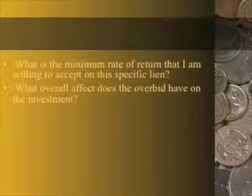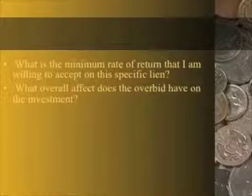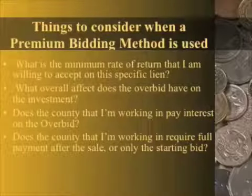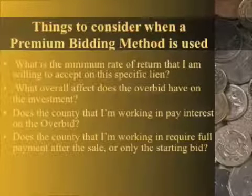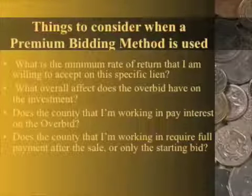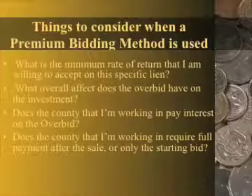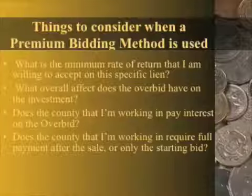The overbid can have a dramatic effect on the investment — the bigger the amount you pay over the actual tax lien, the lower your overall rate of return will be. However, there are some counties in the U.S. that will actually pay interest on the overbid at the same rate as the standard starting bid. If this is the case, it doesn't really matter what the property is bid up to. If you're making a solid 18% rate of return, it doesn't matter if you pay double for a lien — if you're sure it's going to redeem. If it's placed against a property that has value, there's a good chance it will redeem, because the property owner probably won't let the property go to foreclosure over a fairly small amount of delinquent taxes.